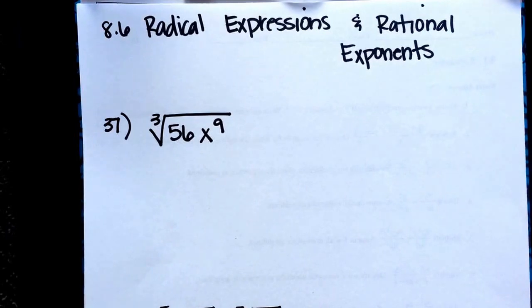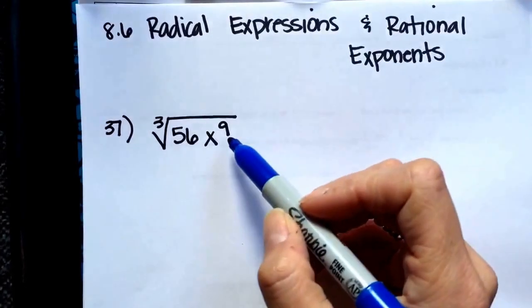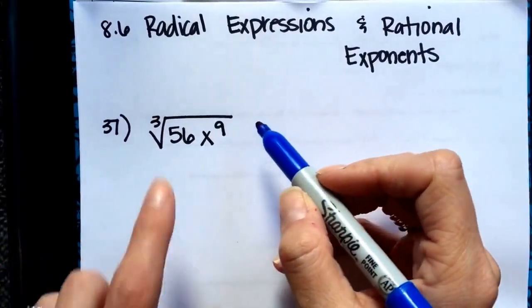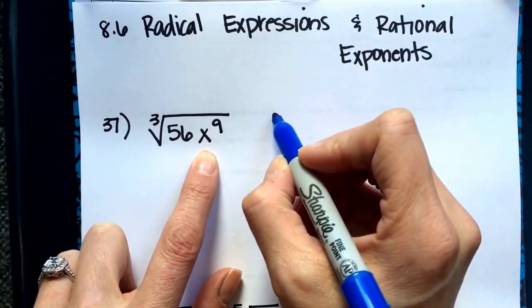So problem 37, we are asked to simplify. What we have done so far is split these up into each of their own separate radicals.